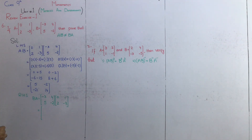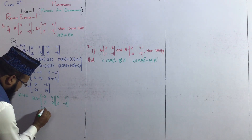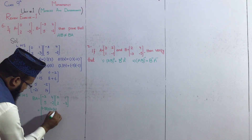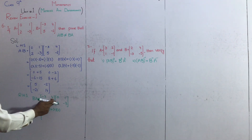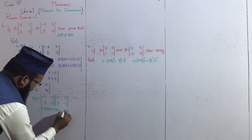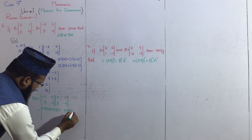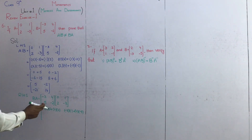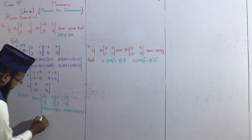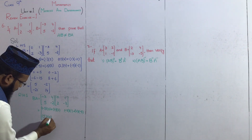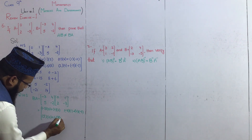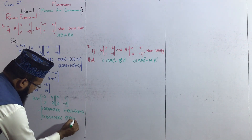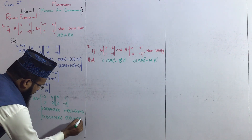First row, first column: minus 3 multiply by 0, plus 4 multiply by 2. Next, first row second column: minus 3 multiply by 1, plus 4 multiply by minus 3. Next, second row first column: 5 multiply by 0, plus minus 2 multiply by 2. Second row second column: 5 multiply by 1, plus minus 2 multiply by minus 3.